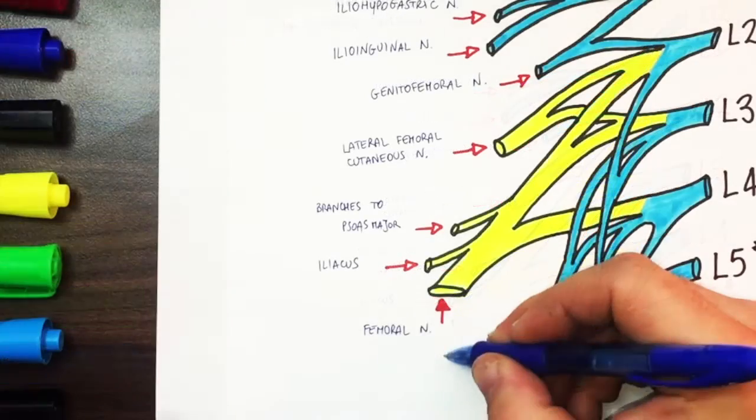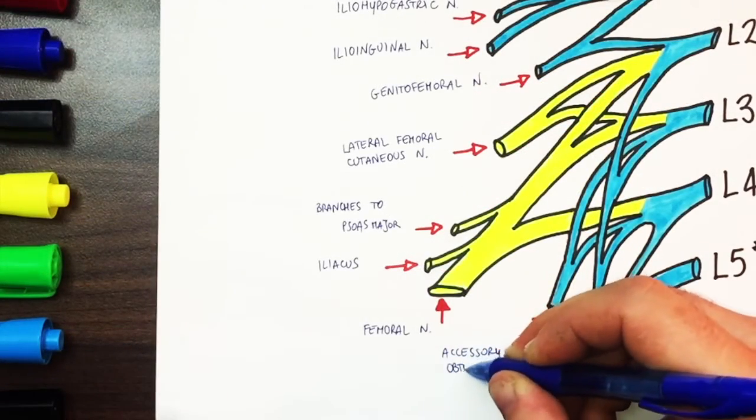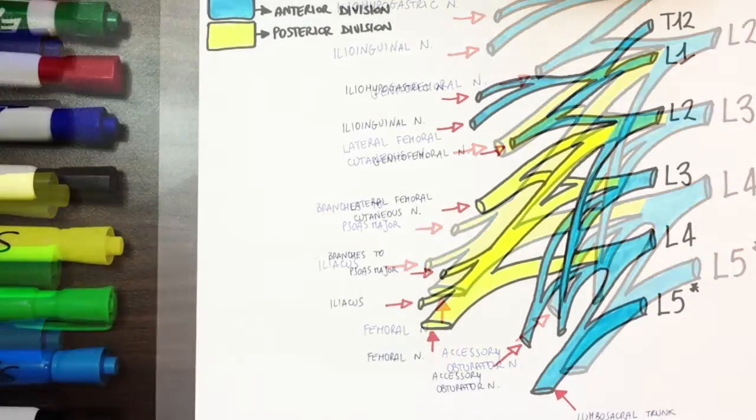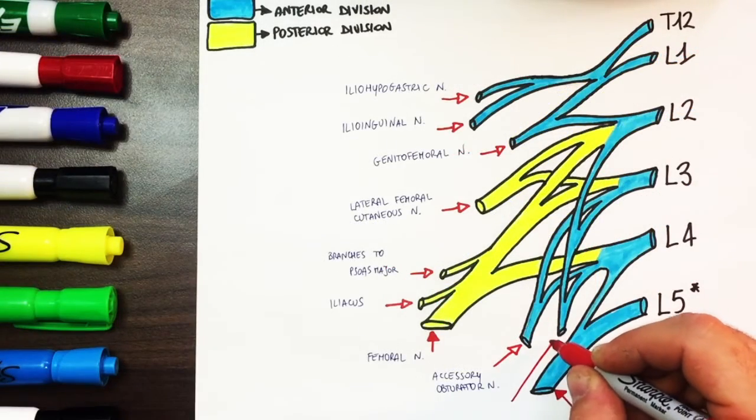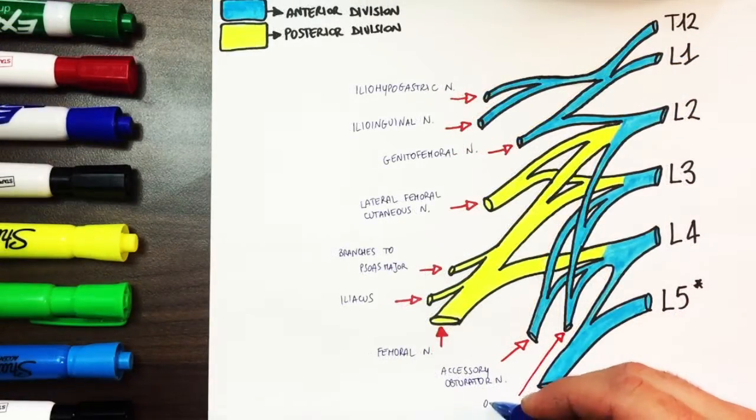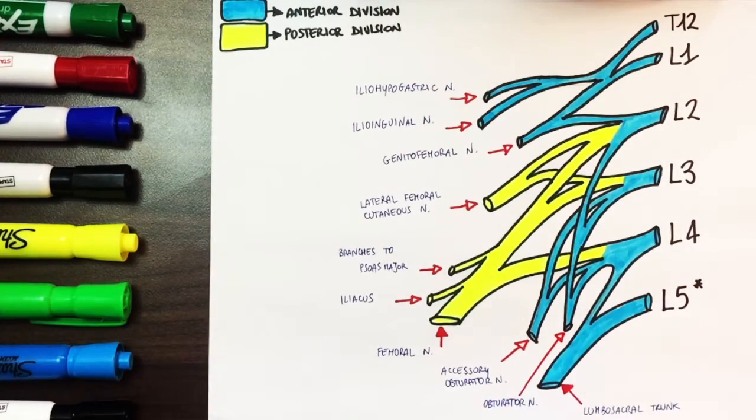Originating from L3 and L4 we have the accessory obturator nerve which is only present in 30% of the population and finally arising from L2, L3 and L4 we have the obturator nerve which innervates the medial thigh.